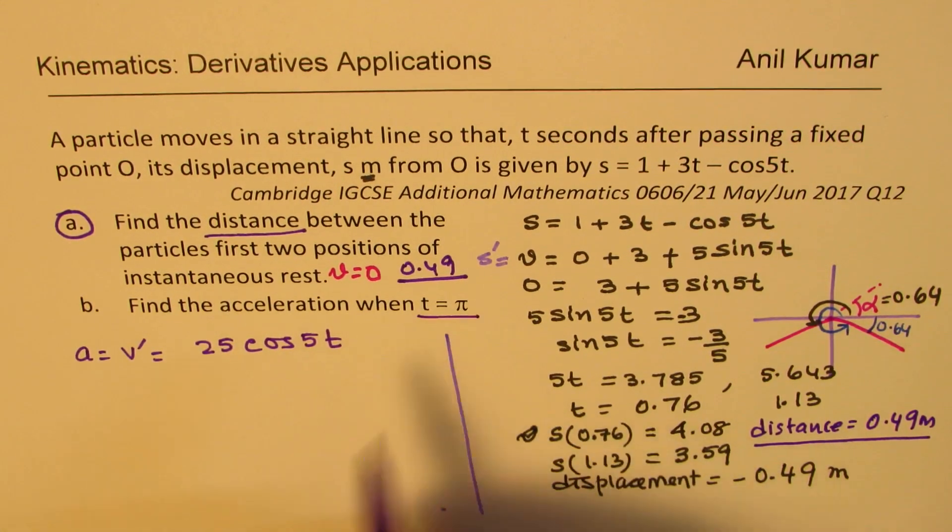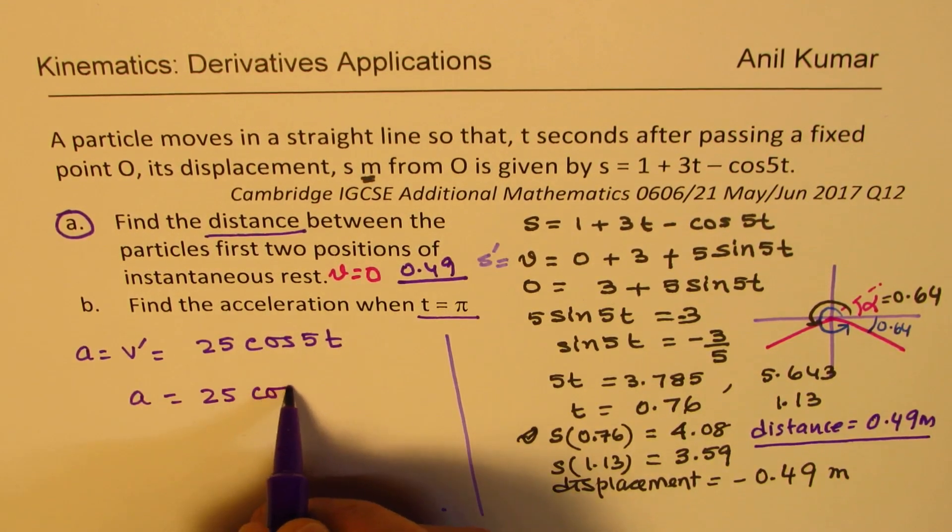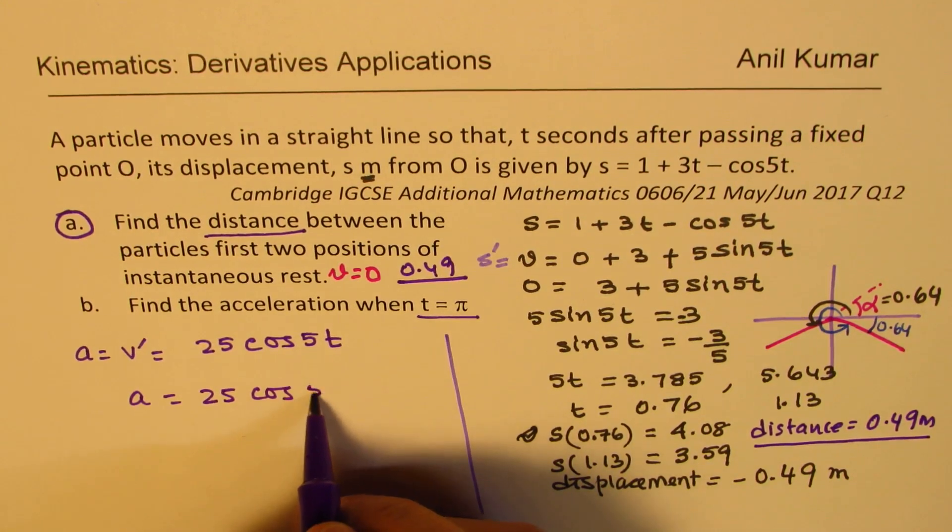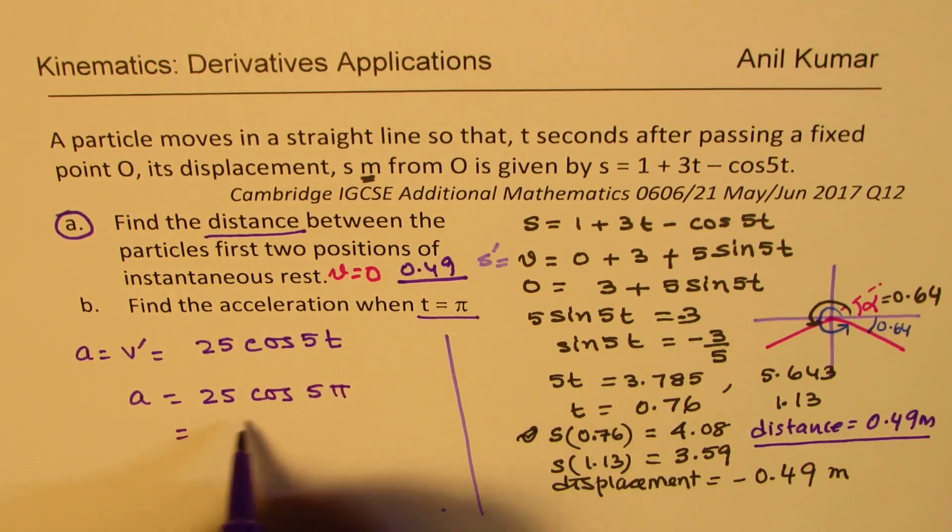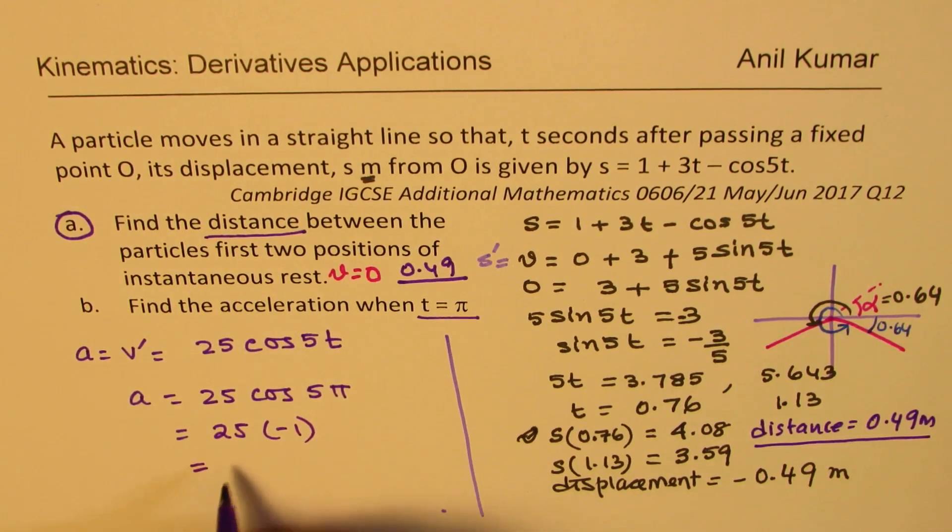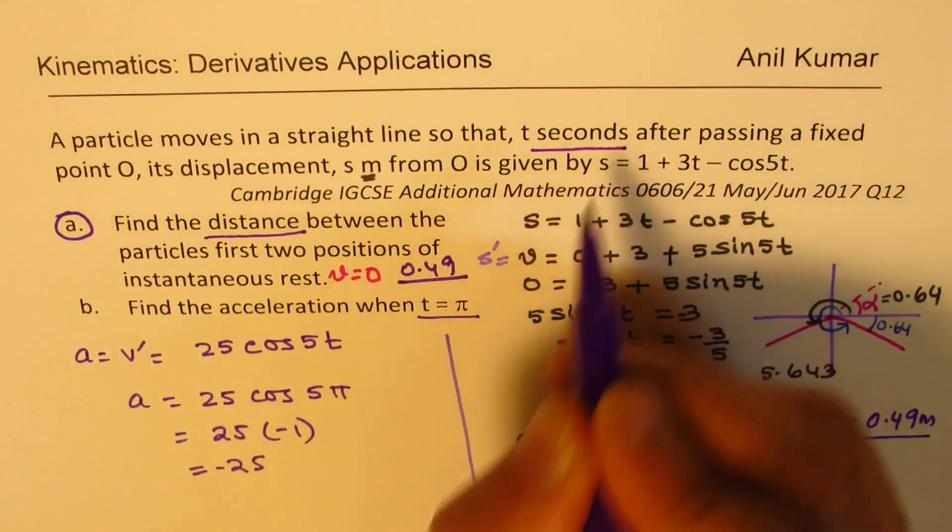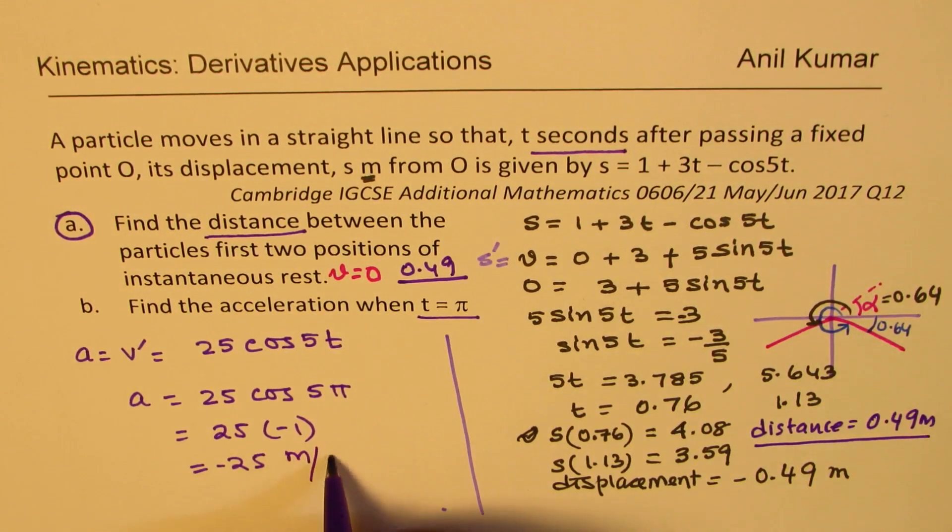When t equals π, that means acceleration will be equals to 25 cos of 5π, which is minus 1. 25 times minus 1, so we get 25 with a negative. Meters per second squared. Time is in seconds. Meters per second squared. Is that clear to you? So that is how we are going to solve this particular question.